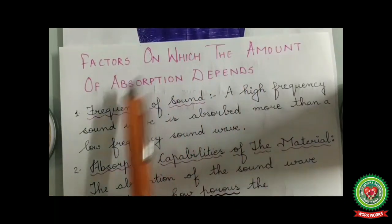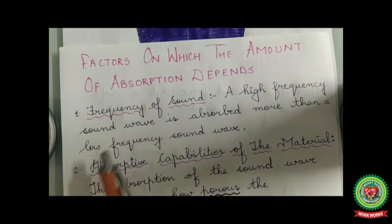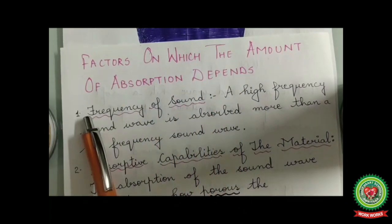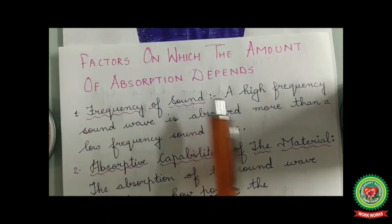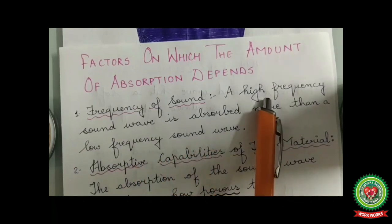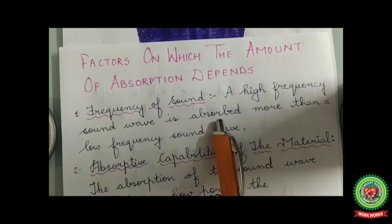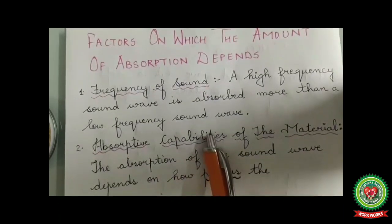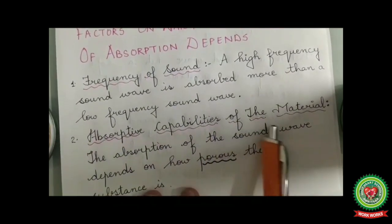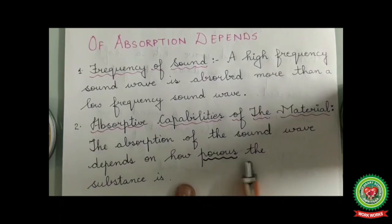There are two factors on which the amount of absorption depends. The first is the frequency of sound — a high frequency sound wave is absorbed more than a low frequency sound wave. That means if the number of vibrations per second is more, the sound will be absorbed more. The second factor is the absorptive capability of the material — absorption also depends on how porous the substance is.